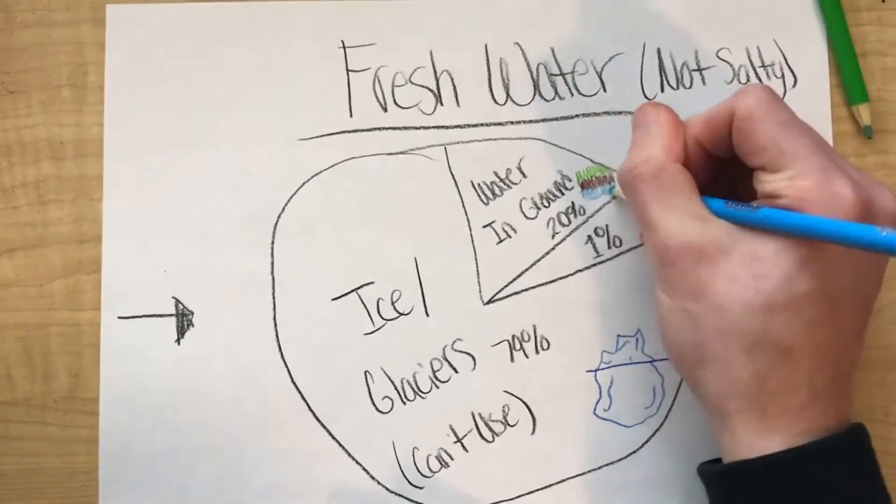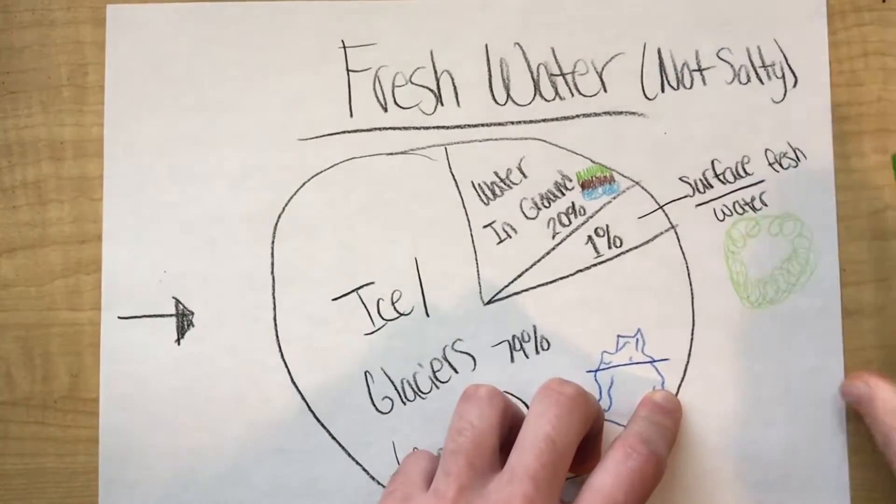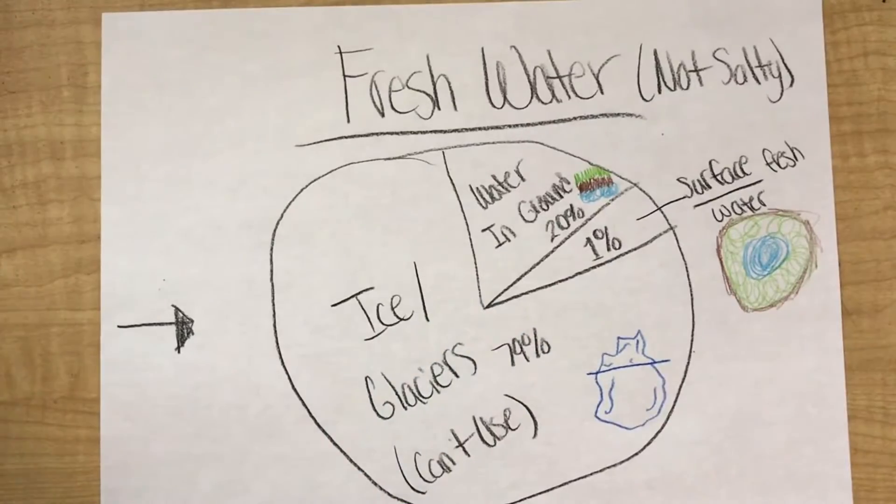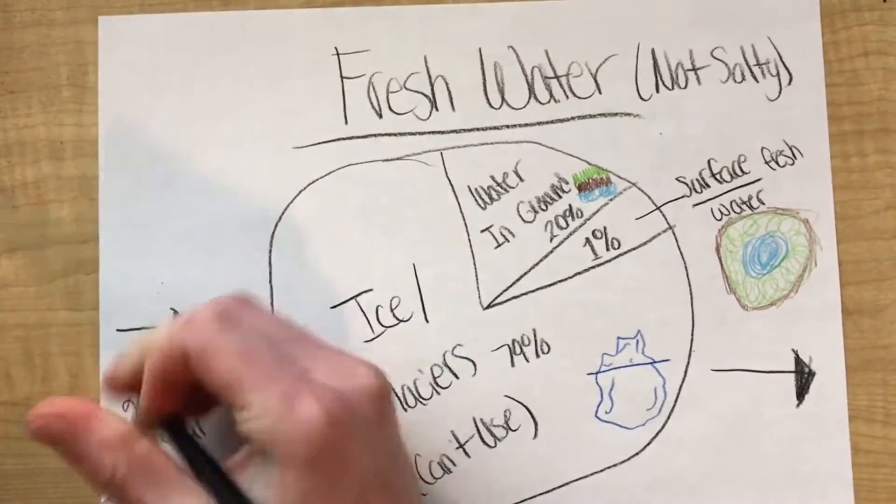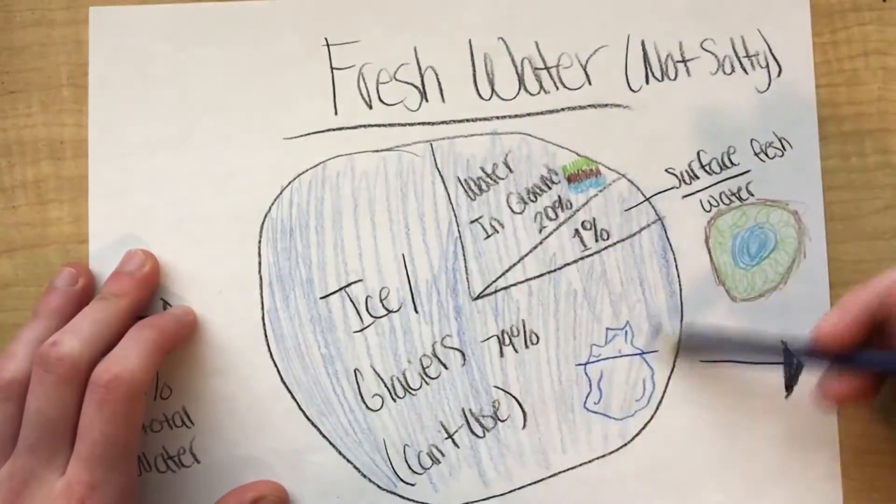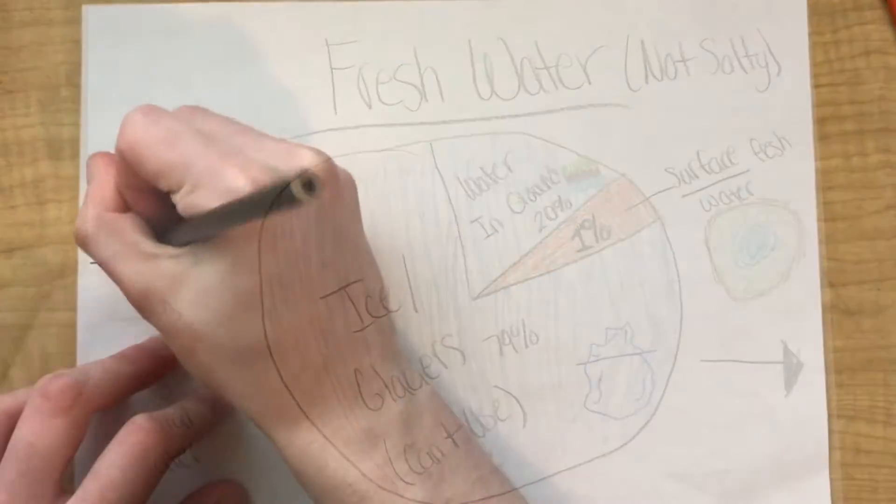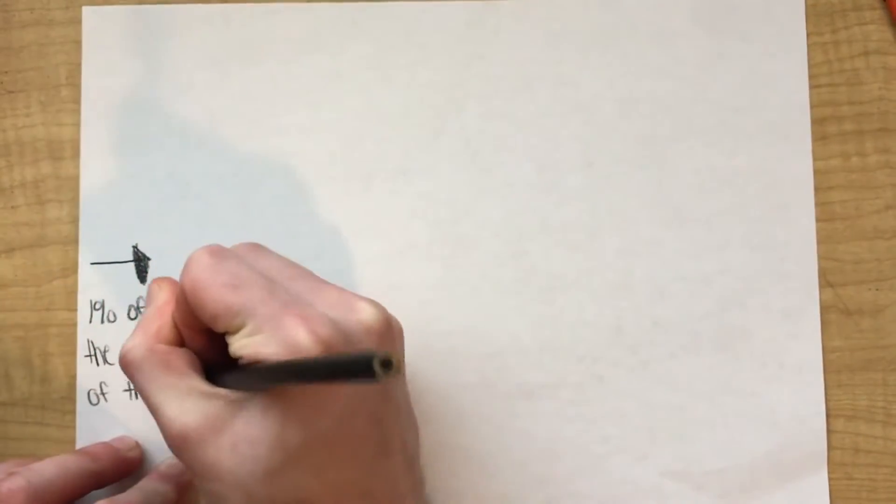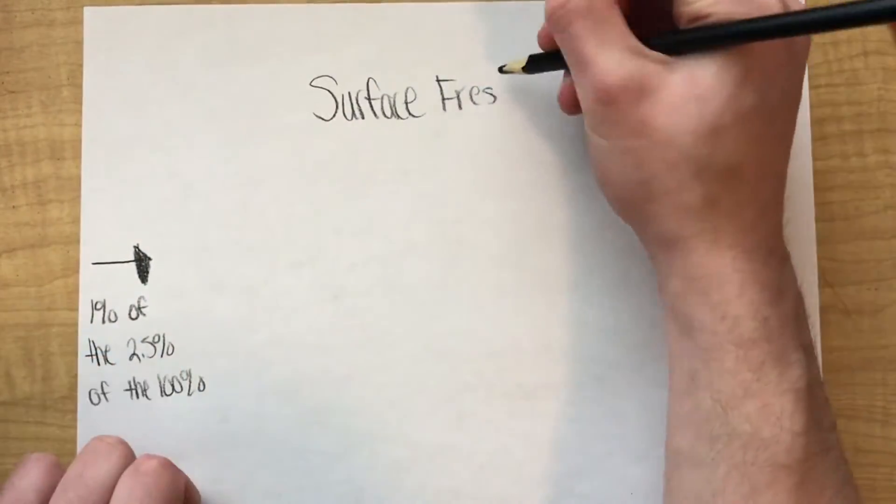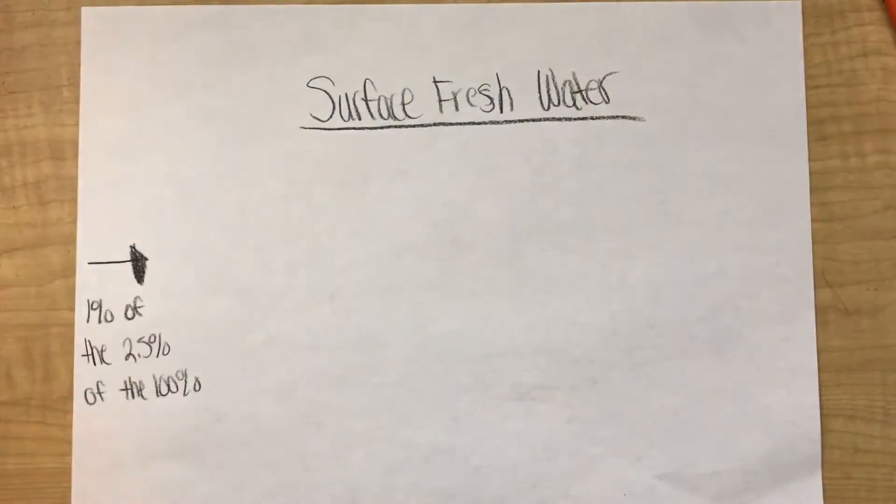However, there is a small portion of our planet's freshwater in the ground. This is called groundwater, and we can access some of this water, but there are challenges that come with doing so. Lastly, there is a tiny portion of the planet's freshwater called surface freshwater, and this is just the water located on top of the earth's surface.